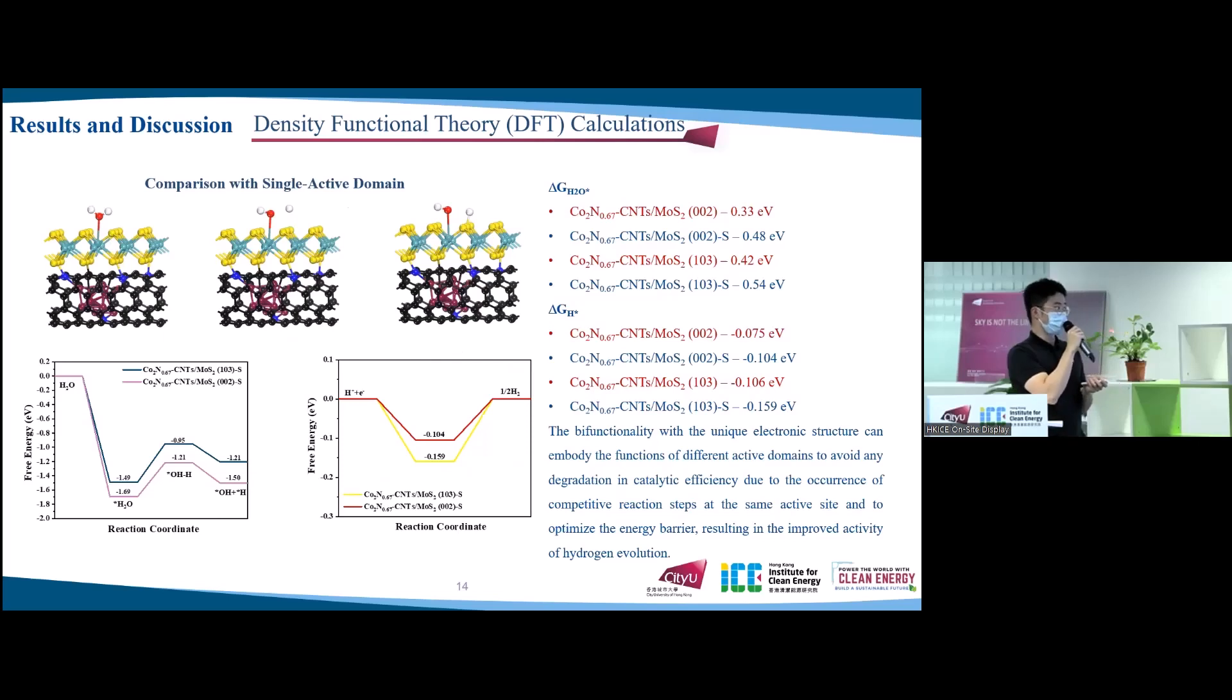To further demonstrate the bifunctional effect that balances the Volmer step to increase the HER performance, the single active domain structures composed of cobalt nitride-CNT and molybdenum disulfide were modeled as possessing molybdenum disulfide as the only one active domain. The Gibbs free energy of water dissociation of these structures are larger than those of cobalt nitride-CNT at MoS2. Also, the Gibbs free energy of hydrogen adsorption is far deviated from the ideal zero electron volt. So we think that the bifunctionality with the unique electronic structure can embody the functions of different active domains to avoid any degradation in catalytic efficiency due to the occurrence of competitive reaction steps at the same active site, and to optimize the energy barrier, resulting in the improved activity of hydrogen evolution.